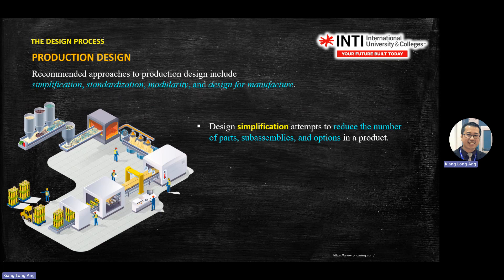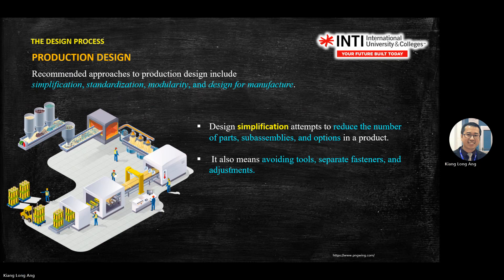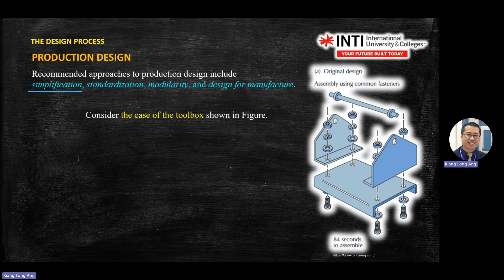Simplification means reducing the number of parts or options, and avoiding tools or separate fasteners or adjustments. For example, you remove screws and use a spring mechanism — just slot in and snap. If you're familiar with installing RAM in a laptop, you just push it in and two hooks mount on the memory card. That is the simplification process. This type of question may appear in question four or five of the final exam.